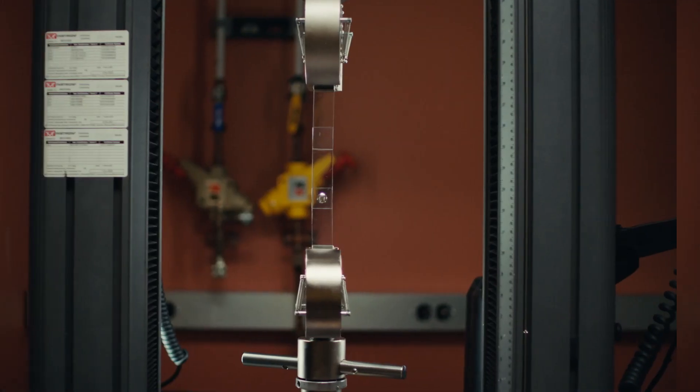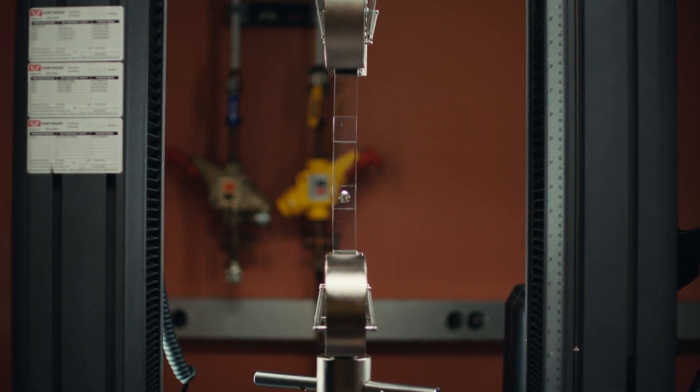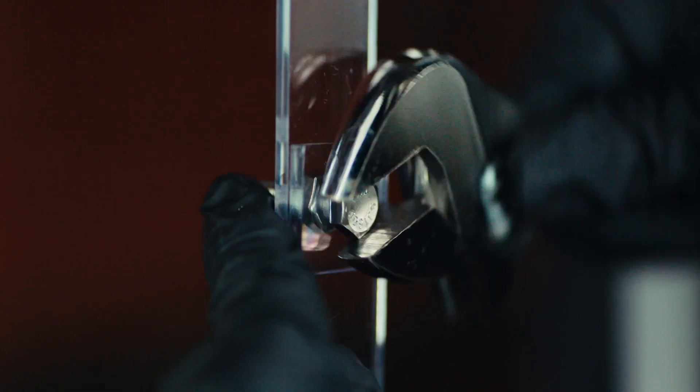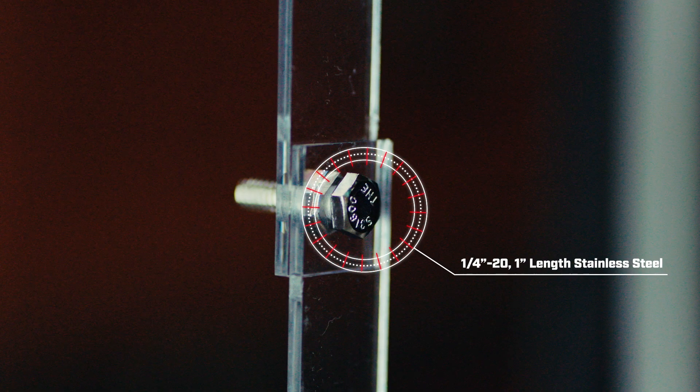Shown are three polycarbonate lap shears. On the bottom, the two pieces of polycarbonate are joined with one stainless steel bolt.